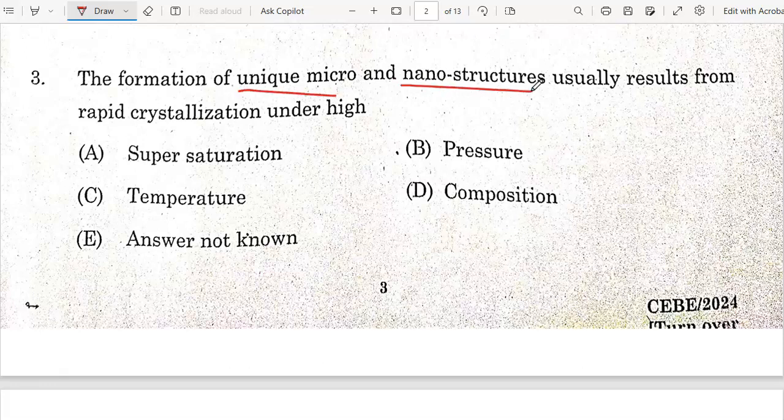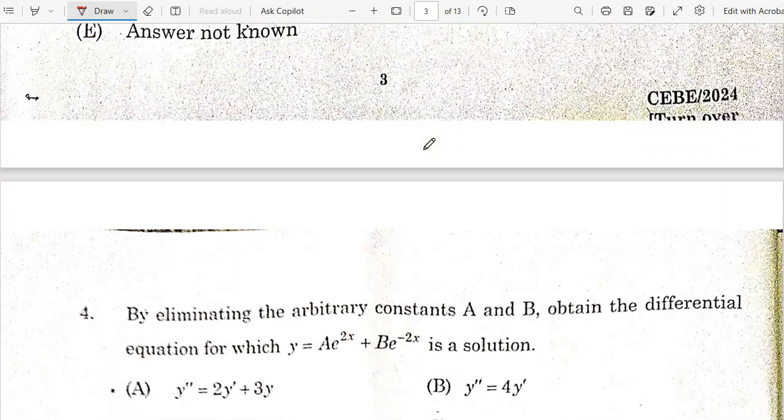Next question: The formation of unique micro and nanostructures usually results from rapid crystallization under high temperature. Unique micro nanostructures are due to results of super temperature, so option C is the correct answer.